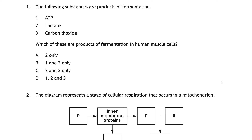For question one the correct answer is B — one and two only, or ATP and lactate. A net gain of two ATP is produced in stage one which is glycolysis — remember that takes place regardless of whether respiration or fermentation is occurring. Pyruvate is also produced in glycolysis and is converted to lactate through fermentation in animal cells such as human muscle cells. Carbon dioxide is only present in fermentation in plant and yeast cells, so three would not count.